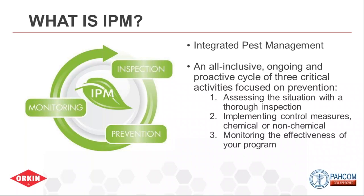Cultural controls are behavioral changes — for example, do employees prop a door open during breaks? That's a pest entry point. Is the dumpster located close to the exterior door where flies could come in? Physical or mechanical non-chemical measures include screens on windows, fans to dry mopped areas faster to eliminate moisture sources, traps, and monitors. Insect light traps are key around entry points — anything that flies in gets caught on a sticky board.